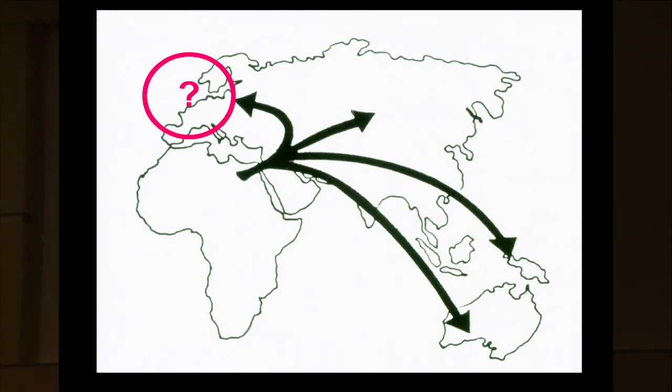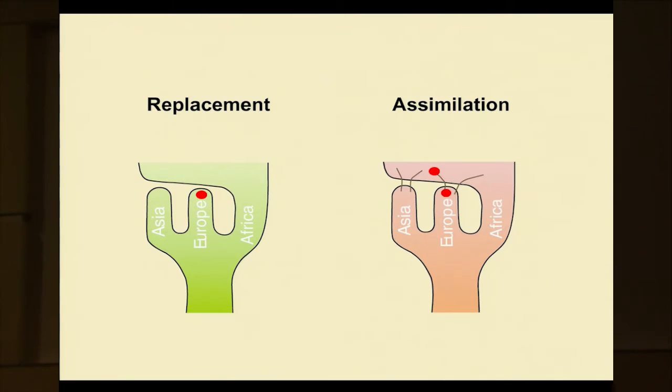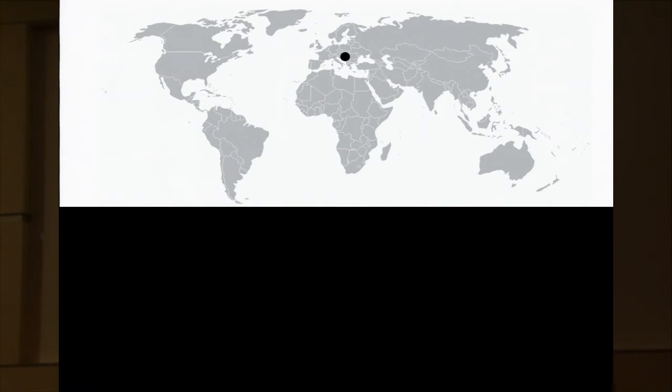We could then for the first time begin to ask questions. One of the questions we were interested in was what happened when one met? Was there interbreeding or not? When modern humans came to Europe and met Neanderthals? We addressed that in many ways, but the most obvious direct one is saying that if there had been interbreeding, we would expect Europeans today to share more genetic variants with Neanderthals than people in Africa today. Because there had never been Neanderthals in Africa.